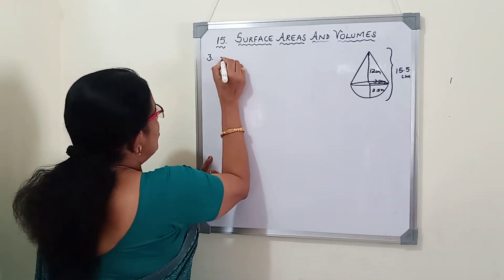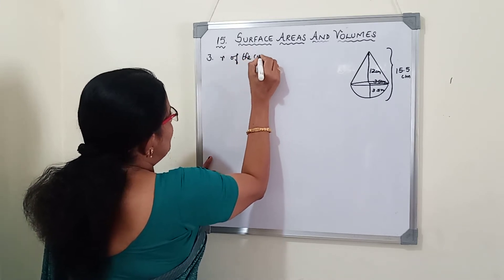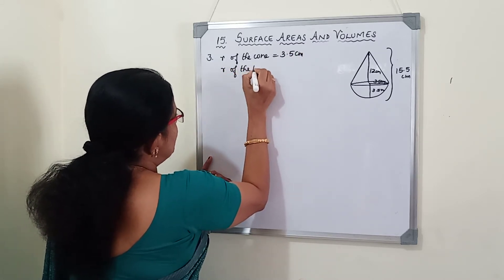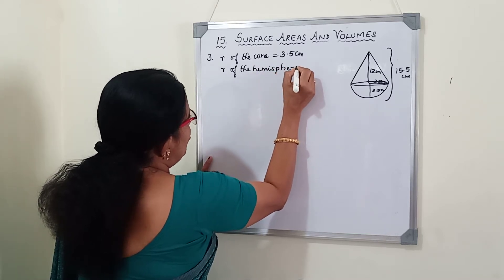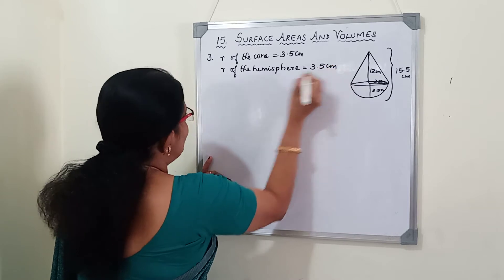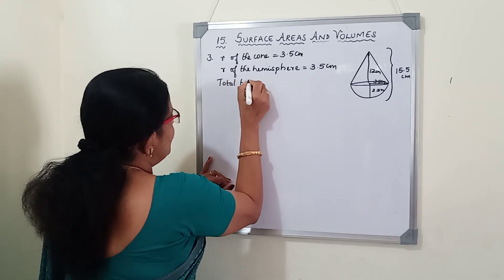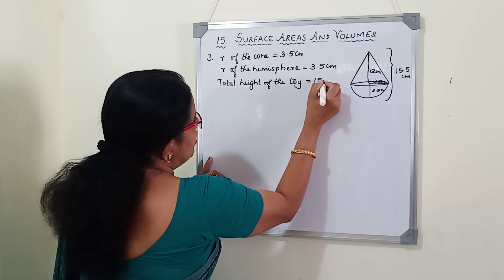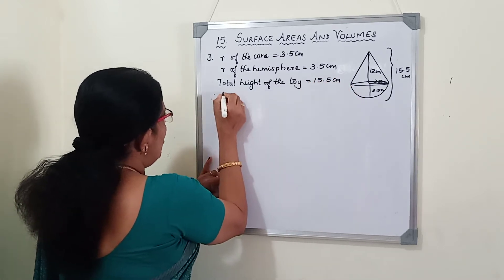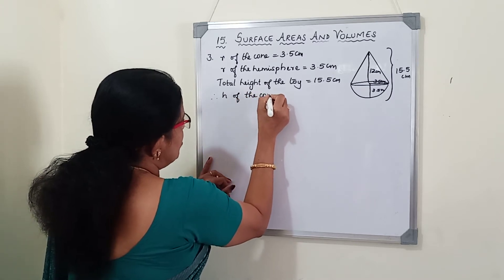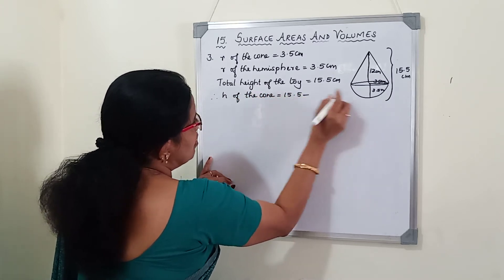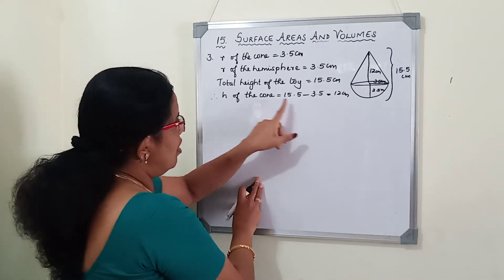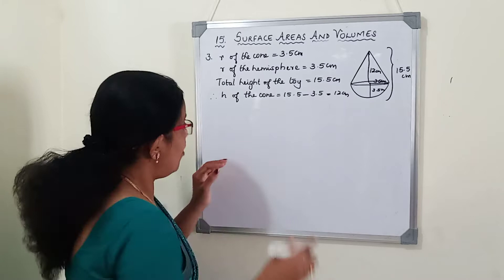First we write: radius of the cone as well as the hemisphere is 3.5 cm. Total height of the toy is 15.5 cm. Therefore, height of the cone equals 15.5 minus 3.5, which is 12 cm. So we have the radius and height of the cone.